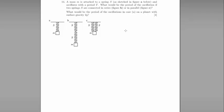Question 14. A mass m is attached to a spring s and oscillates with a period t. What would be the period of the oscillation of the two springs if they're connected in series or in parallel, and what would be the period of the oscillation on a planet with surface gravity 2g?